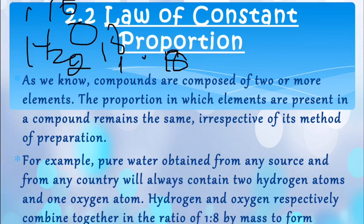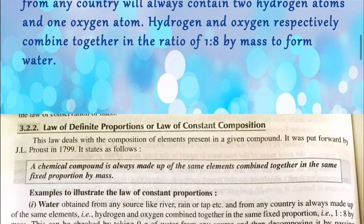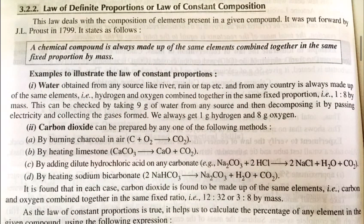1 ratio 8 means the two atoms, they combine in a fixed ratio. Hydrogen and oxygen, they combine in a fixed ratio, that is 1 ratio 8. Either the water is of any source, irrespective of any source, they are in a fixed ratio, that is 1 ratio 8. So, always compounds combine in a fixed ratio by their mass number. That is law of definite proportion.